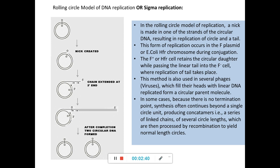Now let's go to the rolling circle model. In bacteria, the genetic material is mainly the circular chromosome, but there is also extra-chromosomal genetic material called plasmids. The rolling circle model of DNA replication is exhibited mainly by plasmids, and also by certain phages or viruses that fill their heads with linear DNA.